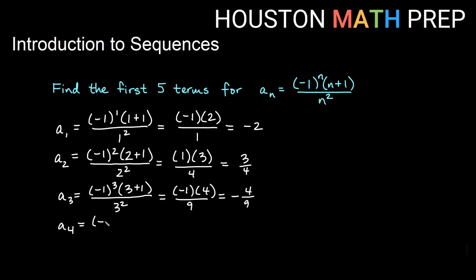For the fourth term, we will have negative 1 to the 4, n plus 1 becomes 4 plus 1, and then 4 squared. We get an even power of negative 1 on the top. That will be a positive 1 for that. 4 plus 1 will give us 5, and then 4 squared on the bottom becomes 16. So we get positive 5 over 16 for this one.